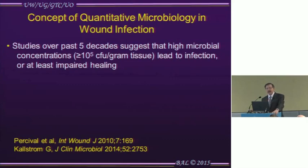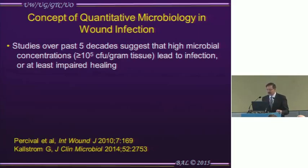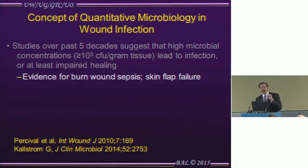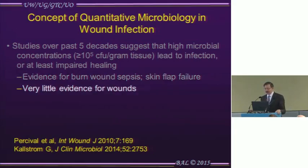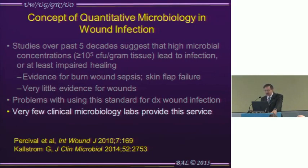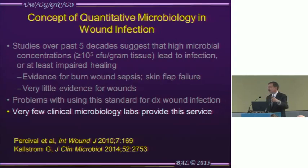Defining infection is key. For about 50 years, studies concluded that growing greater than 10 to the 5th colony-forming units per gram of tissue meant a wound was truly infected. There is evidence that burn wounds with that degree of colonization have increased risk of bloodstream infection, and that a flap over a wound with that many organisms is more likely to fail. I've just told you all the evidence in the world for greater than 10 to the 5th — and yet there are problems with using this standard. Very few clinical microbiology labs will do quantitative microbiology and tell you the exact number of organisms in a wound.